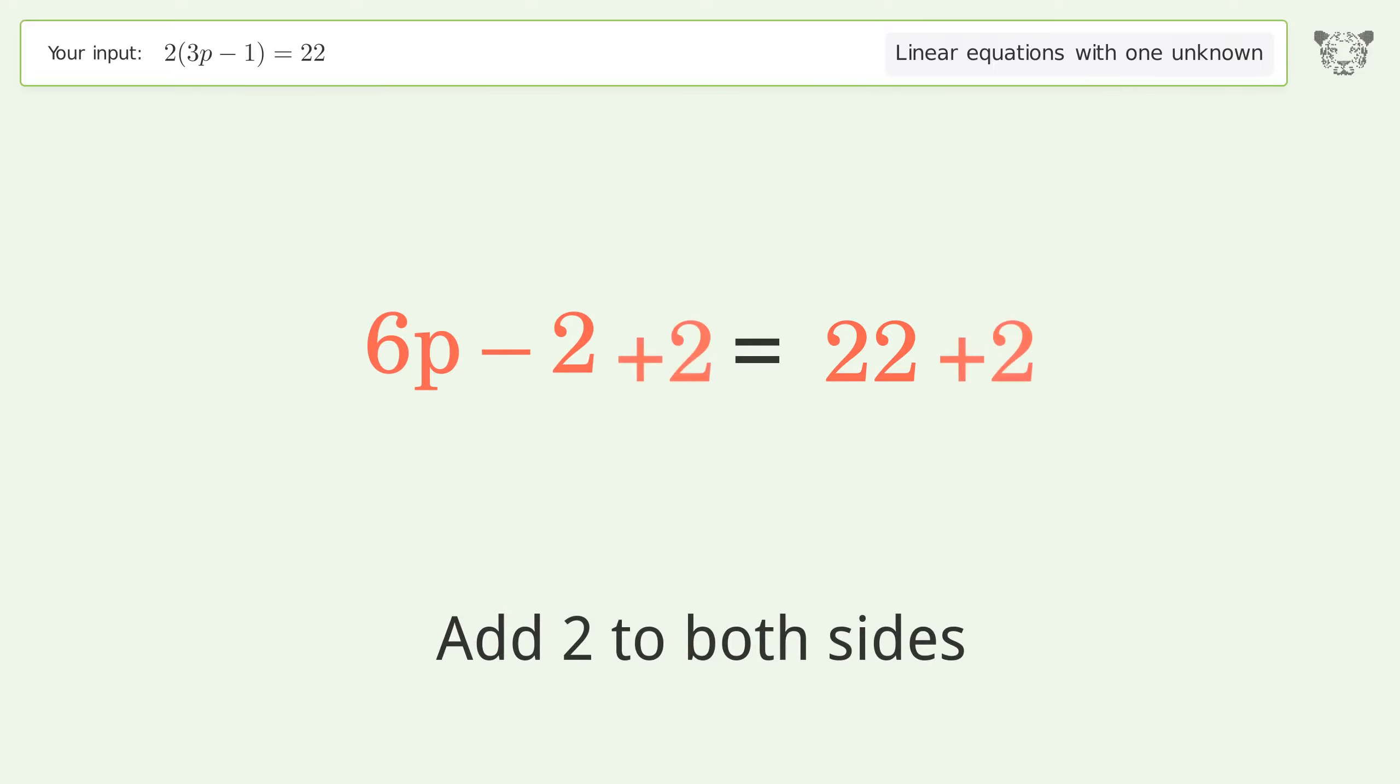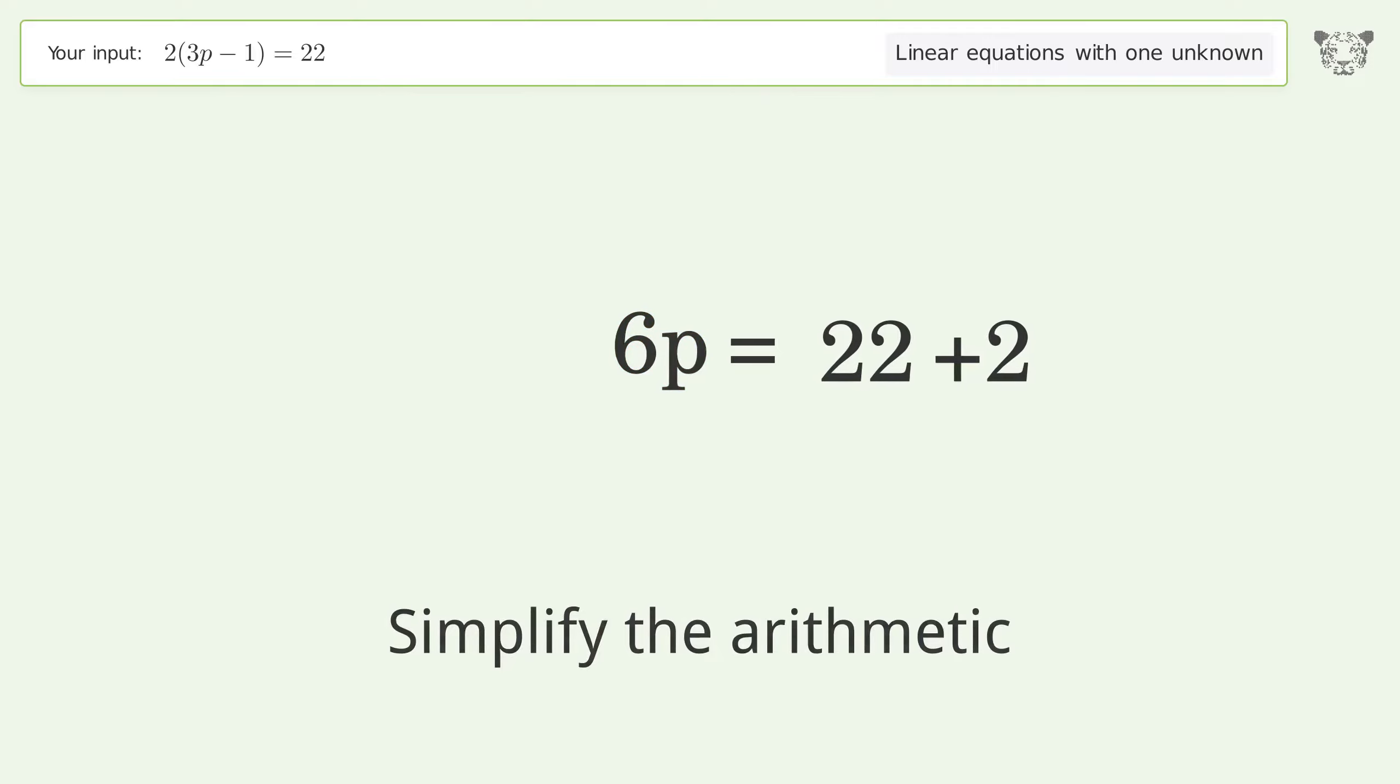Group all constants on the right side of the equation. Add 2 to both sides. Simplify the arithmetic.